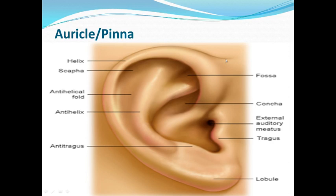What is the auricle or pinna? What the layman generally calls the ear — that visible part seen on the face — is the auricle or pinna. This part of the external ear is the part that the layman calls the ear.